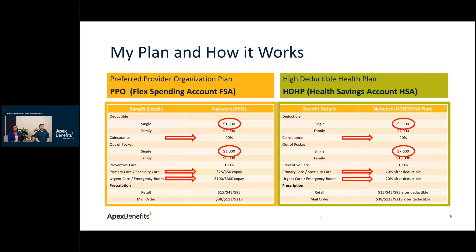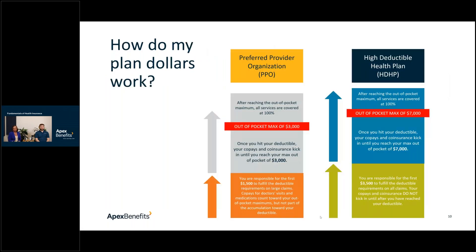A chart shows how those dollars work from the ground up. For the PPO, you pay the $1,500 deductible, then coinsurance and copays apply up to the $3,000 out-of-pocket maximum, after which everything is covered at 100%. Note that PPO copays for medications and doctor visits do not count toward the $1,500 deductible. For the HDHP, all costs are first-dollars out of pocket — no copays until after the $3,500 deductible — then coinsurance and copays apply to the $7,000 out-of-pocket max, after which everything is covered at 100%.